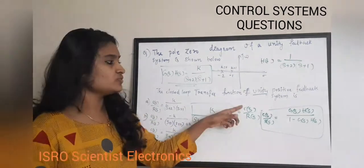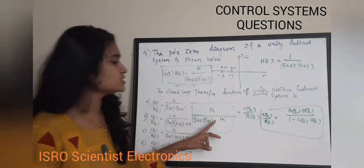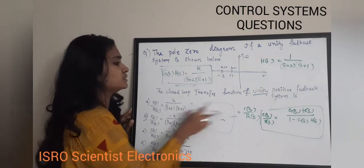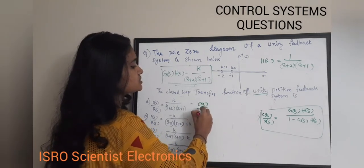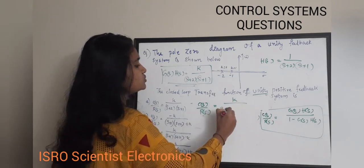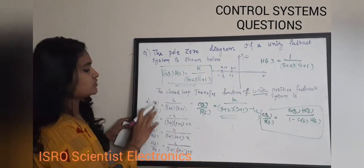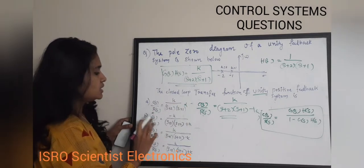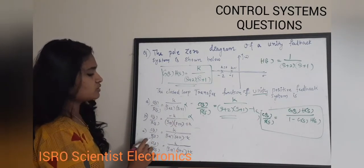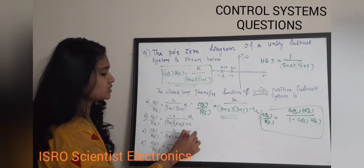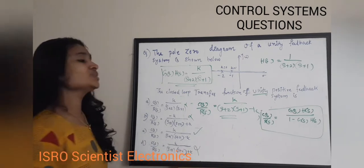So C(s)/R(s) = K / [(s+2)(s+1) - K], where C(s) is the output Laplace and R(s) is the input Laplace. Looking at the options: option A is wrong, option B is wrong, option C gives K / [(s+1)(s+2) - K] which is correct, and option D with a plus sign is wrong. The correct answer is option C.